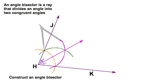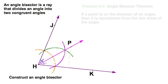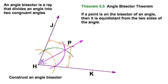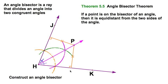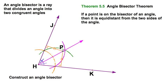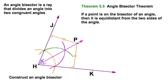That is an angle bisector. Now let's put a random point P on there. Since the distance between a point and a line is the perpendicular distance, you can see the perpendicular to each of these two rays. P is equidistant from those two rays at all times — the perpendicular distance to HK is the same as from HJ.